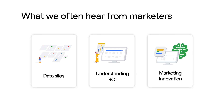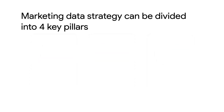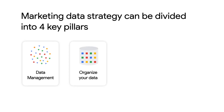A successful marketing data strategy is critical for addressing these challenges. The four key pillars of a successful marketing data strategy are: data management, which ensures enterprise-wide collection and governance of first-party data; data organization, which consolidates data across platforms and matches data from different systems for a holistic view; and advanced analytics, which uses techniques like machine learning to segment users and predict the next best action for marketing teams.